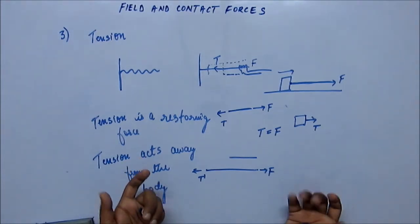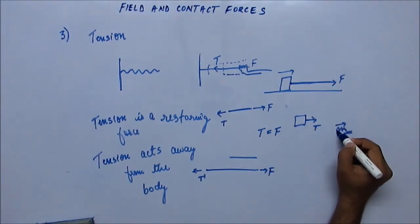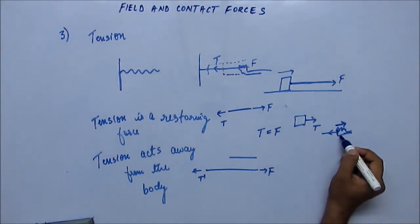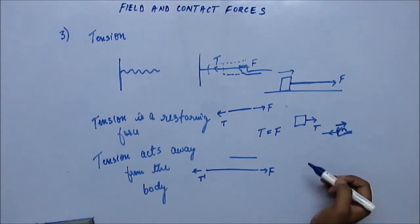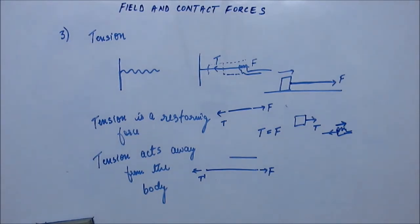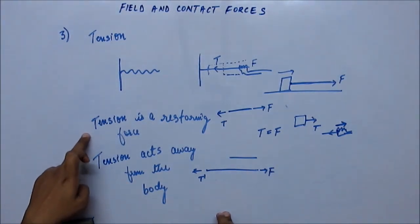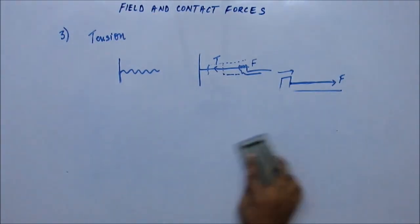Tension is acting away from the block — not toward it — because tension is a restoring force and always acts away from the body. At our hand, the hand applies some force in the right-hand direction and the string pulls back on the left, so the net force on the hand is zero and it moves with constant velocity. The key point is that tension is a restoring force by virtue of elongation in the string, it opposes the stretch and acts inward, away from the body.